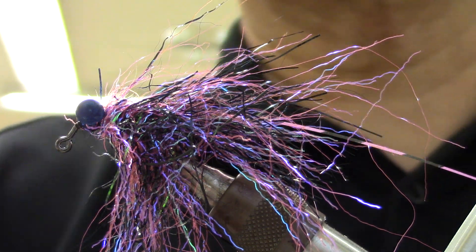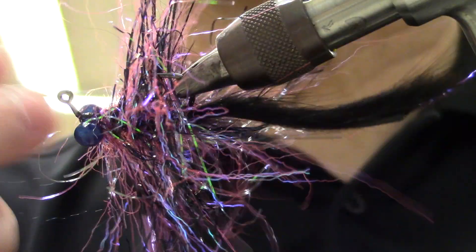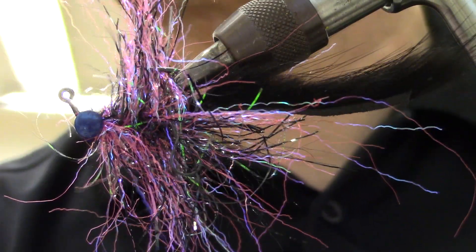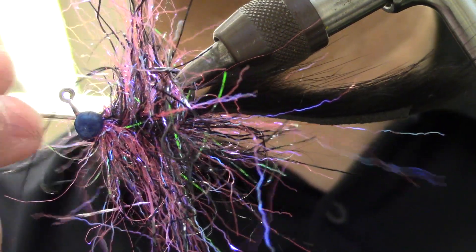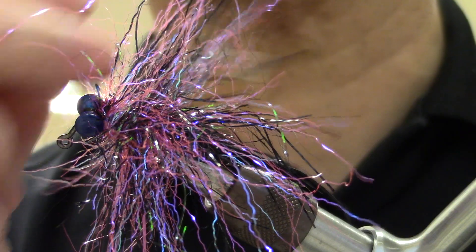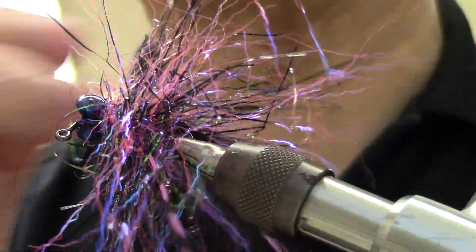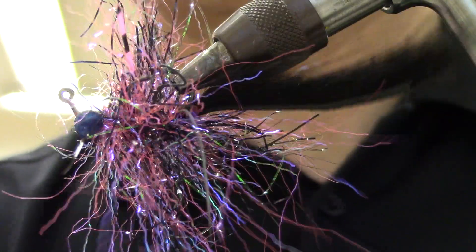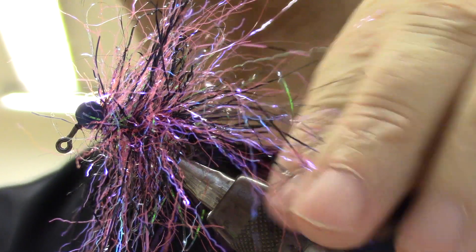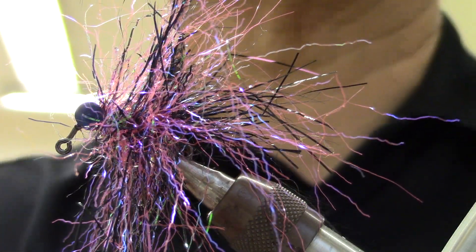And then the only other thing I need to do is to pick out the fibers a little bit. And I really think this is going to be a hit when I take it out and be bouncing it along the bottom here. Along the rocks and stuff. I think maybe something like this in an orange or an olive. Imitate a crawdad. That's all there is to it. Easy peasy fly. I think it's going to work really well. I hope you enjoyed this. Thank you.